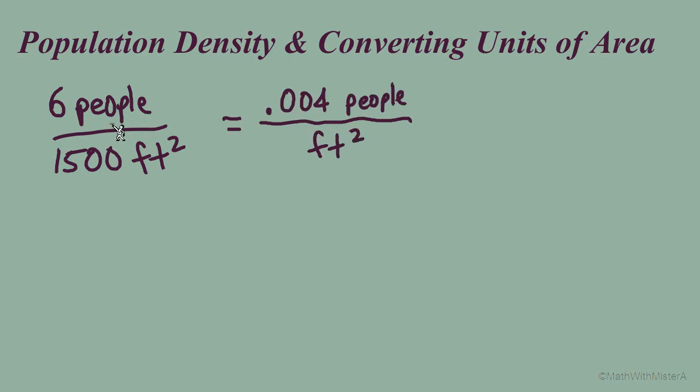It's important to see one way to show that these two fractions are equal. We know with fractions and ratios that we can multiply or divide any number, as long as we do it to the numerator and denominator, we'll have an equivalent fraction. In this case, we're going to divide numerator and denominator by 1,500. In the denominator, 1,500 divided by 1,500 equals 1, and 6 divided by 1,500 equals 0.004 people per square foot.